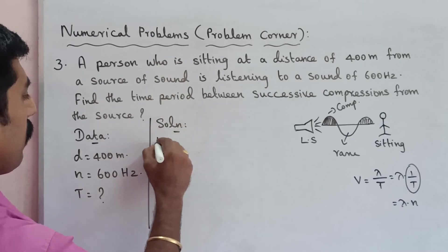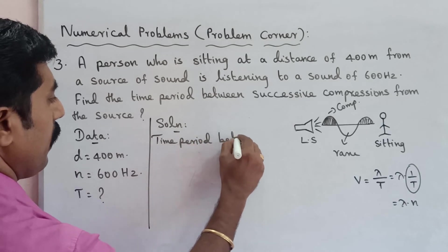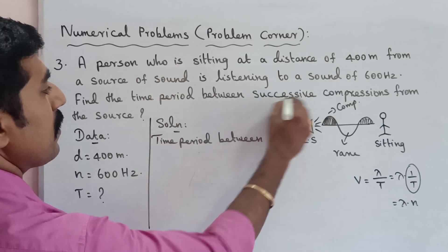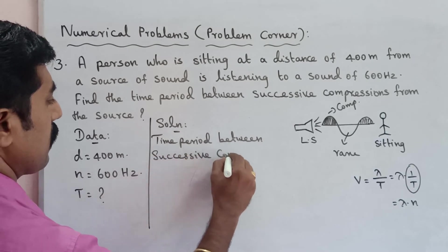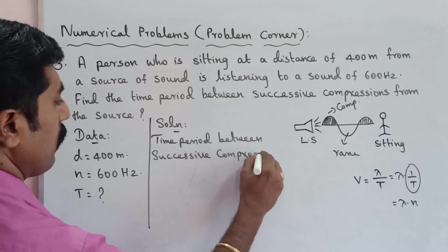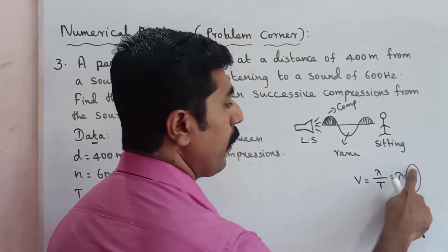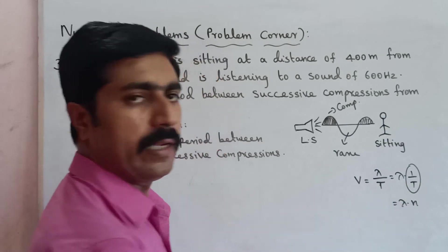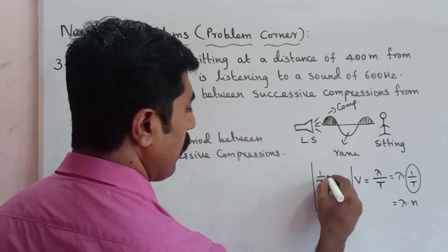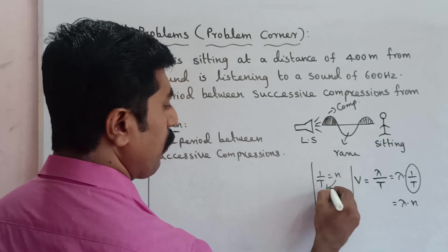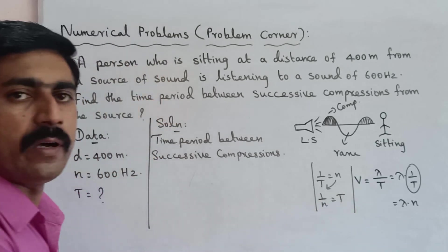The time period between successive compressions: 1 by T is equal to N, that is frequency. So 1 by N is equal to T. This is the formula.